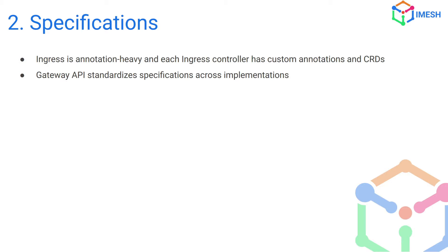Gateway API, on the other hand, standardizes things. If you're doing traffic management — canary releases, weighted load balancing — there's a standard prepared for it. These standards are provided to all vendors, and whoever is implementing Gateway API needs to adhere to them. So even if you want to change vendors, you might just have to change the Gateway class name and you're done. That's how easy it is with Gateway API. The standardization helps vendors implement all core features, and if a vendor is lacking a core feature you need, you already have extensibility available.